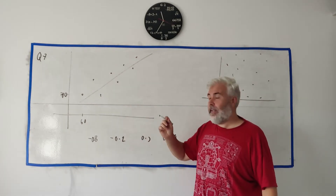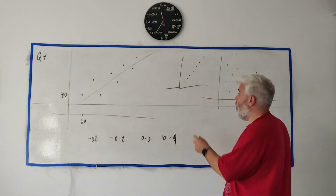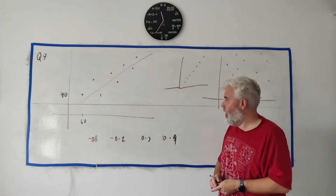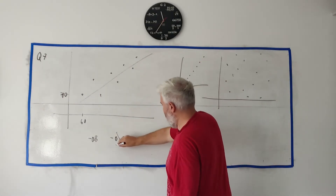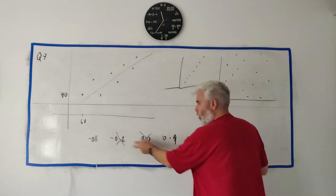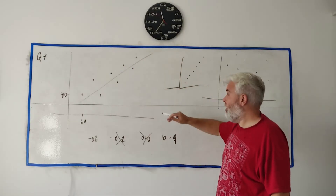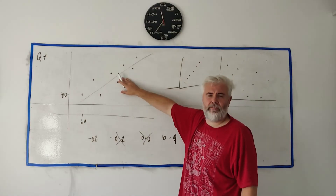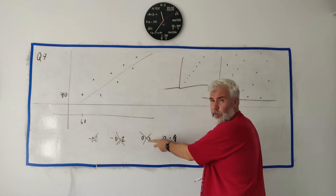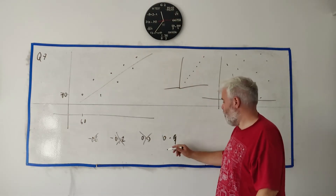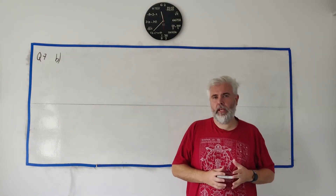Since the pattern looks like a line, it should be close to 1 or minus 1. Whether it's positive or negative simply depends on whether the line goes up or down — and this scatter graph is going up, so it's a positive correlation. That rules out the two negative options. Between 0.3 and 0.9, the data looks like a pretty good line, so my answer is 0.9 — a strong positive correlation.